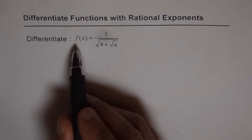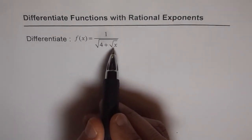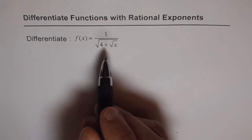So we have a function f of x equals 1 over square root of 4 plus square root of x. So it's kind of tricky.